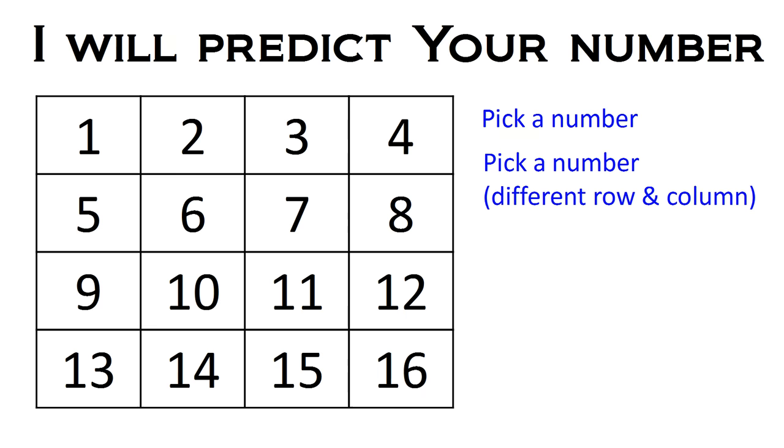Now I want you to pick a second number, and I want one condition. I want that number to be in a different row and a different column from the first number you've picked.